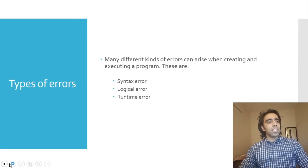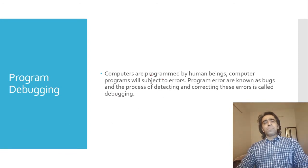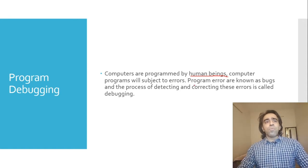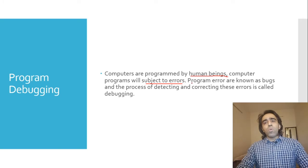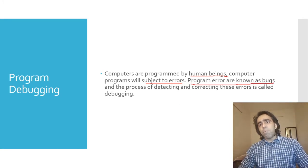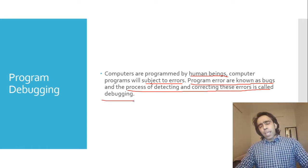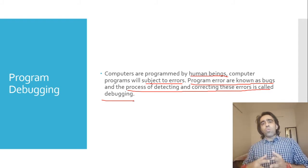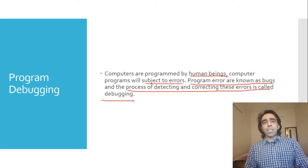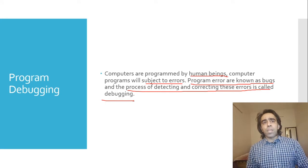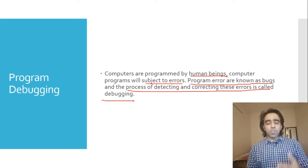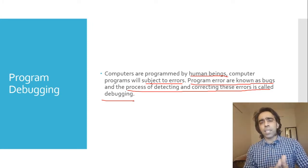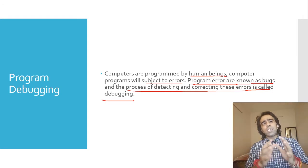A computer program is basically created by human beings, and the program is subject to error — meaning there are many opportunities for errors in that program. The process of detecting and correcting these errors is called program debugging. Program debugging का मतलब है program में error को find करें, उसको correct करें — इस process को हम बोलते हैं program debugging.